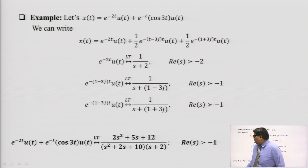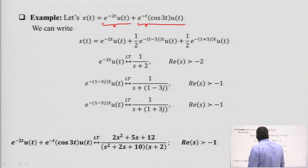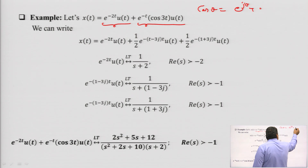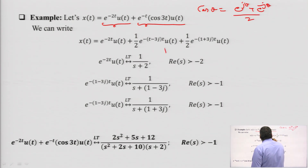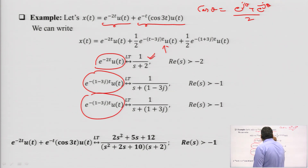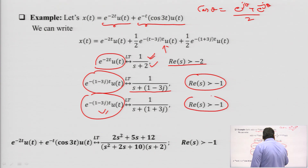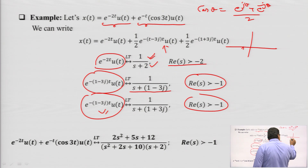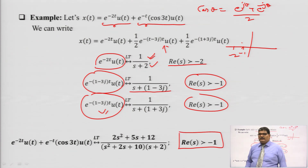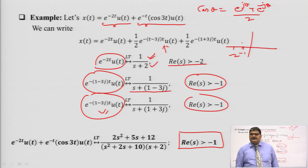Next example: X(t) = e^(-2t)u(t) + e^(-t)·cos(3t)·u(t). Using the identity cos θ = (e^(jθ) + e^(-jθ))/2 and the form 1/(s + a), each term's Laplace transform is obtained. The individual ROCs are at −2 and −1; their intersection gives the overall ROC: real part of S > −1.